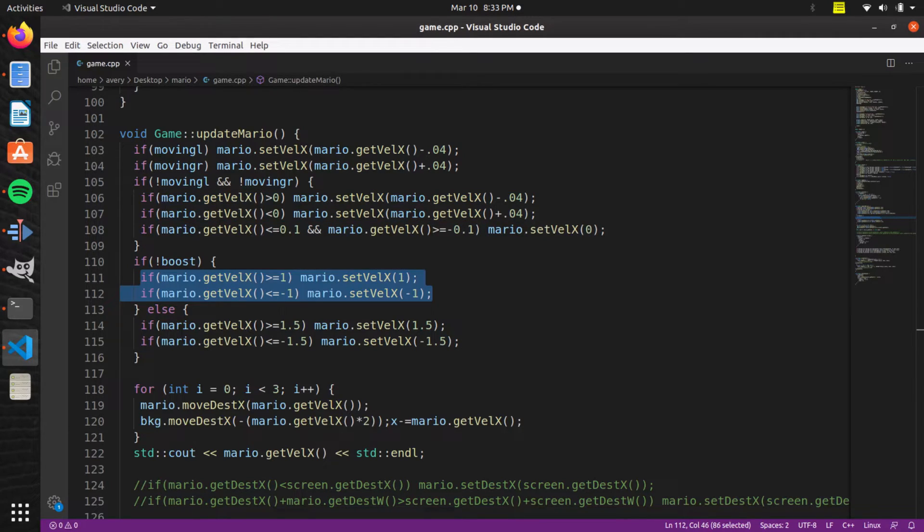There's also a max speed like we saw in the graph. This is going to be the cap. So once he reaches that he can't go any further than that. That's as fast as Mario can go.